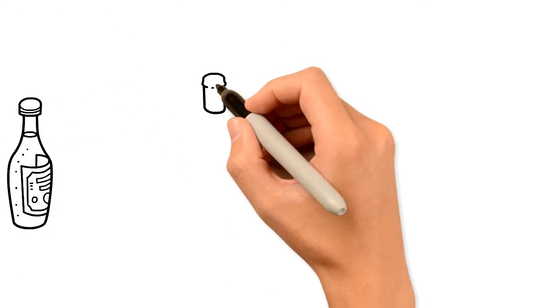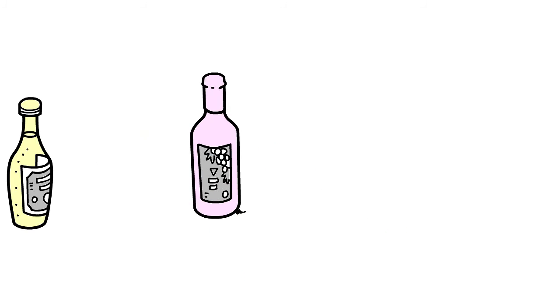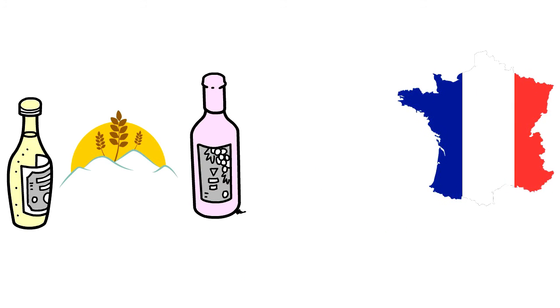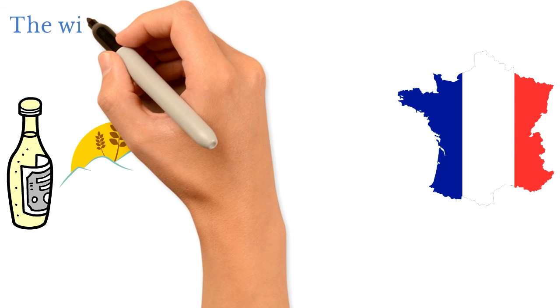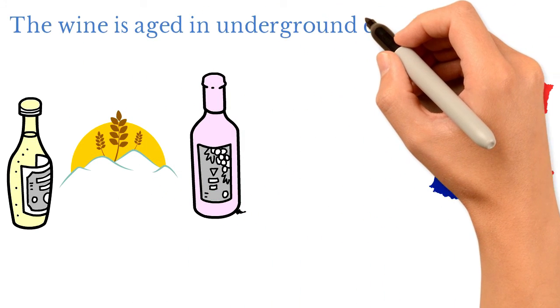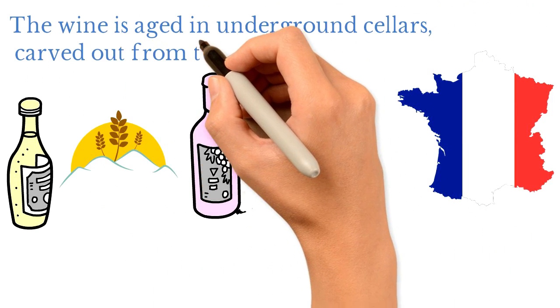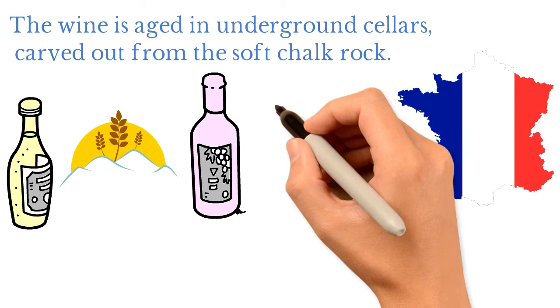Champagne wine is the most famous product of the Paris Basin. It is produced from vineyards that grow on the south-facing scarp of Île-de-France. The wine is aged in underground cellars carved out from the soft chalk rock. Reims is the market center for the wine.